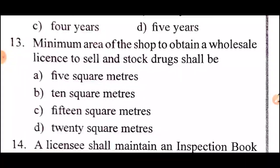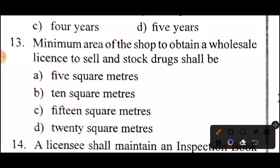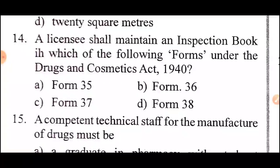Question 13: The minimum area of the shop to obtain a wholesale license to sell and stock drugs shall be what? The answer is Option B: 10 square meters.